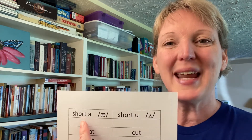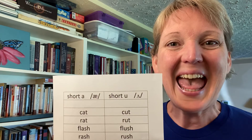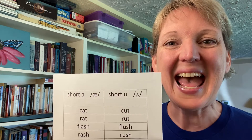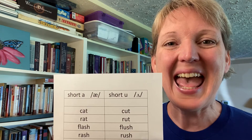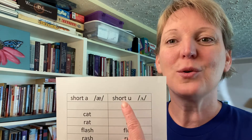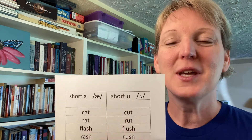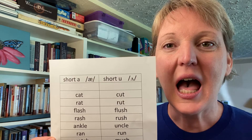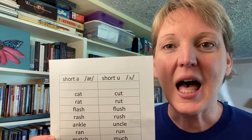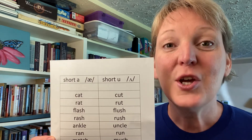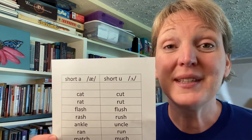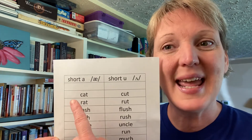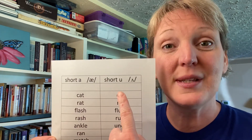We have the short A which sounds like /æ/ /æ/ /æ/ and the short U which sounds like /ʌ/ /ʌ/ /ʌ/. Notice the position of my tongue when I go from the short A sound to the short U sound.